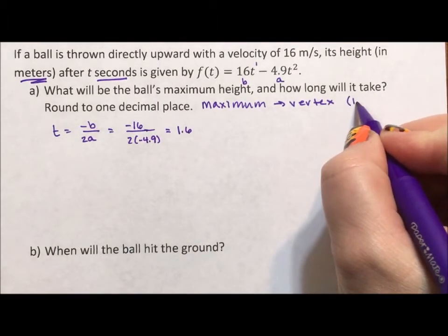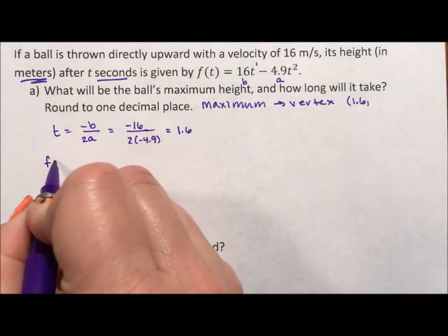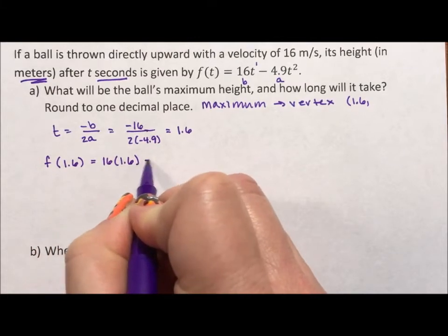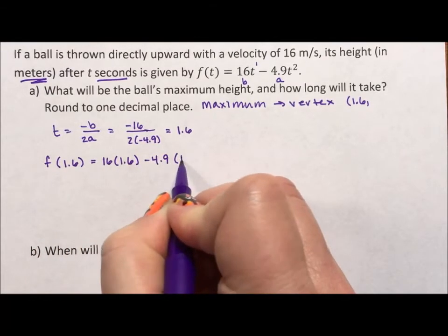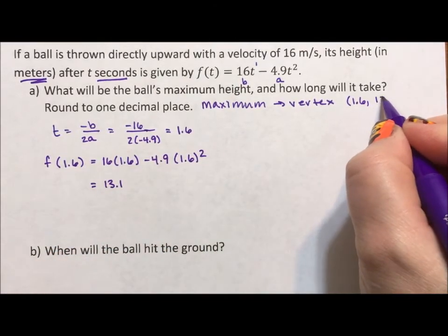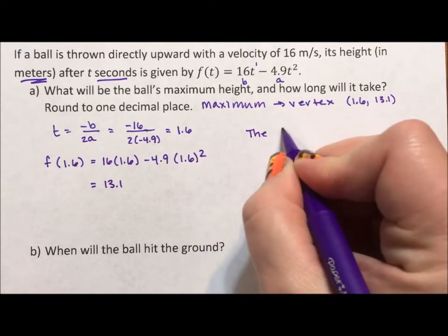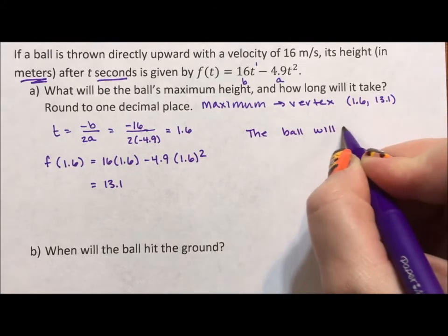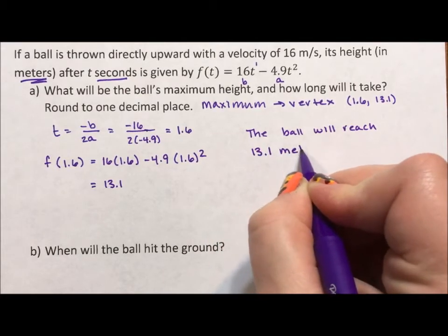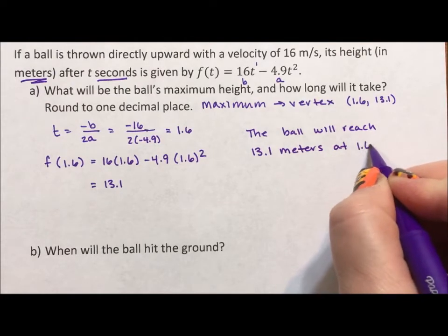So if this is my vertex, the input of the vertex is 1.6. To find the output, we actually have to calculate f of 1.6. So we take 16 times 1.6 minus 4.9 times 1.6 squared, and we get the answer of 13.1. So the ball will reach 13.1 meters at 1.6 seconds.